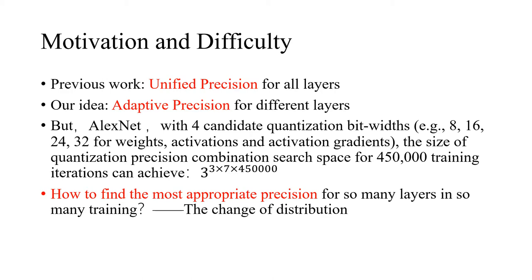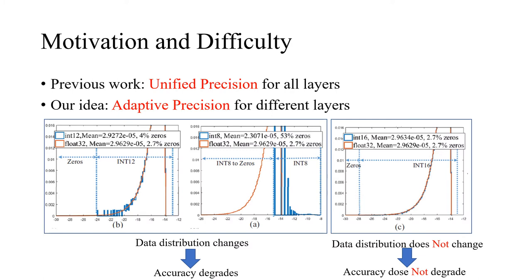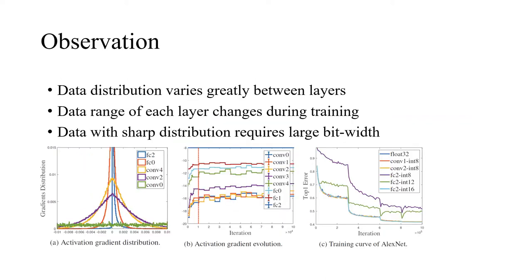Here we propose a layer-wise precision-adaptive quantization in training. The new approach leverages our insight that the degradation of training accuracy is attributed to the dramatic change of data distribution, and data with sharp distributions requires large bitwise.